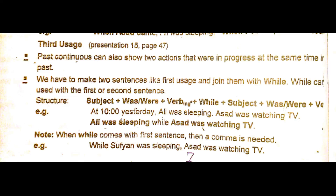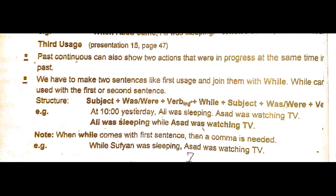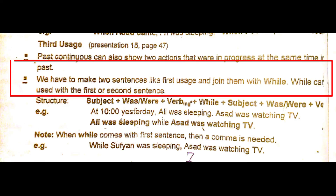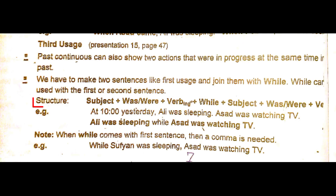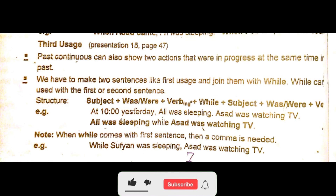The third use: past continuous can also show two actions that were in progress at the same time in the past. We make two sentences like the first use and join them with 'while.' 'While' can be used with the first or second sentence. Structure: subject + was/were + verb-ing + while + subject + was/were + verb-ing.